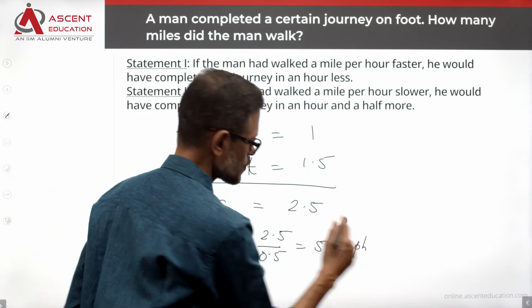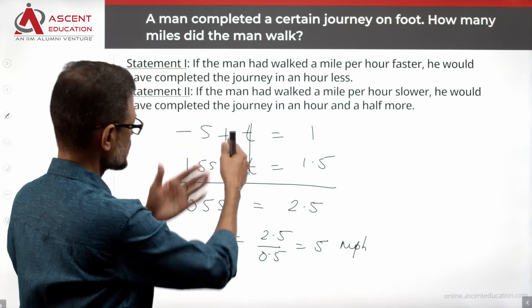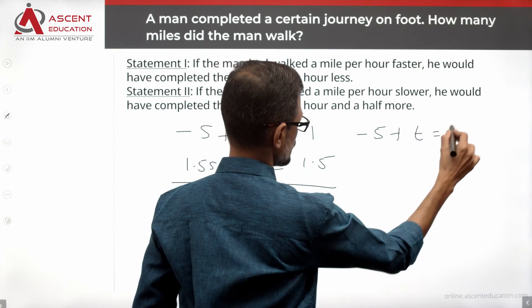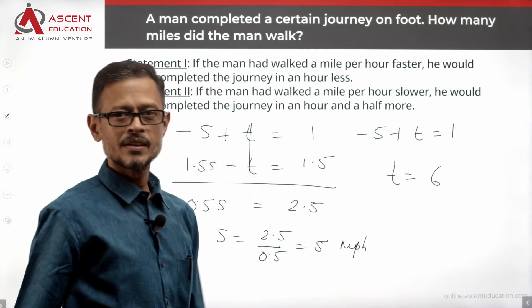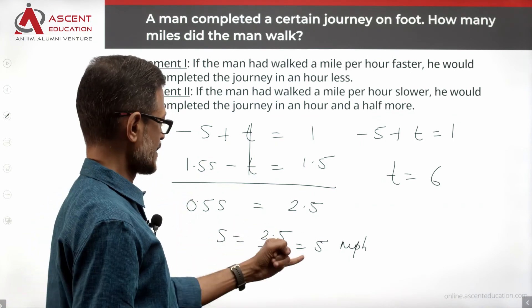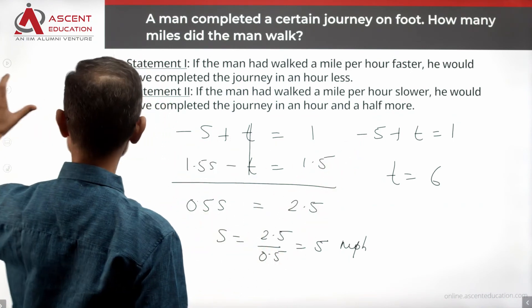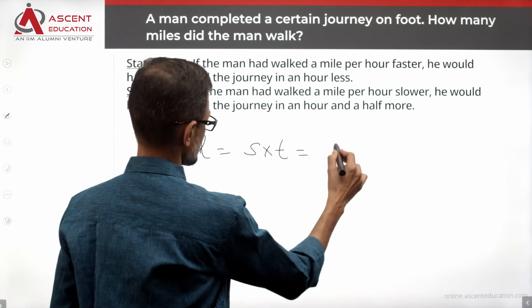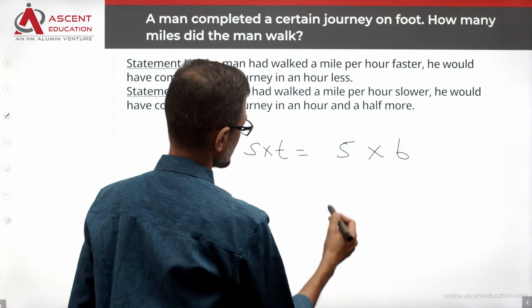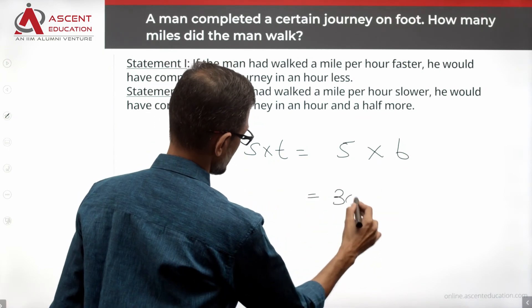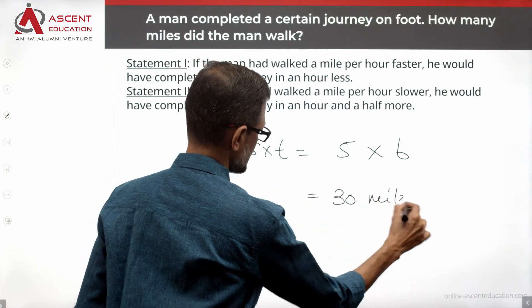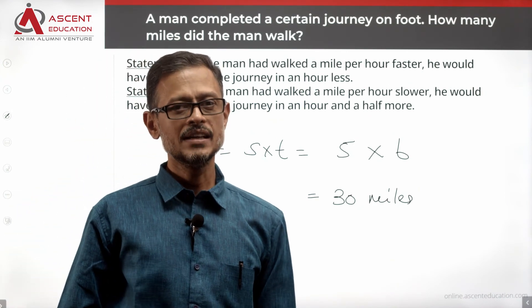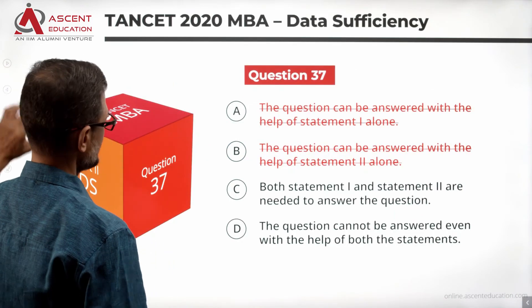Plugging S equals 5 back into equation 1: T minus 5 equals 1, so T equals 6 hours. Distance equals S times T equals 5 times 6 equals 30 miles. Combining both statements, we have found a unique value for the distance traveled. Statements together are sufficient, so the correct answer is C.